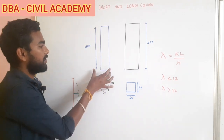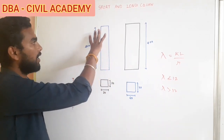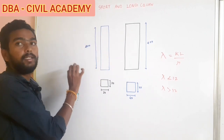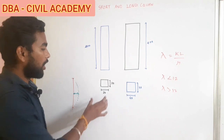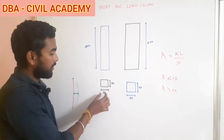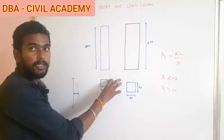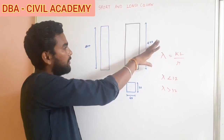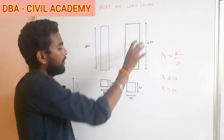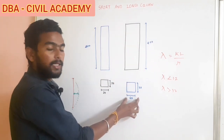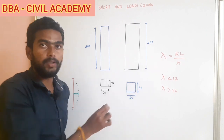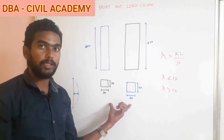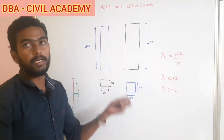Let's take a look at an example with an RCC column. The height is 4 meters, that is 400 centimeters. In the first case, the cross-section is 23 cm by 23 cm. In the second case, the same height of 400 centimeters is used, but the cross-section is increased to 45 by 45. So, the height is the same but the cross-sections are different. Now let's calculate the slenderness ratio.